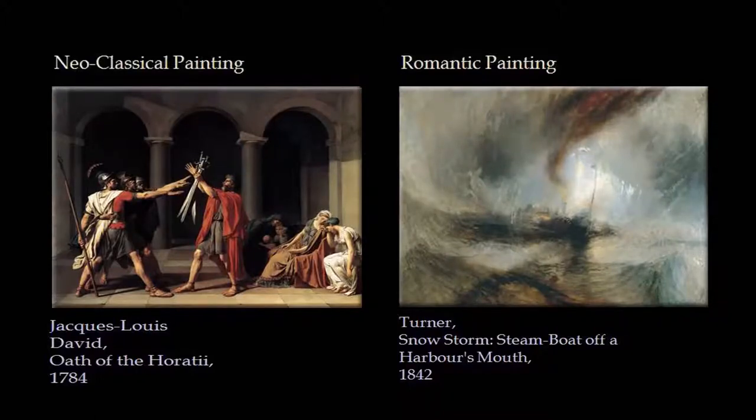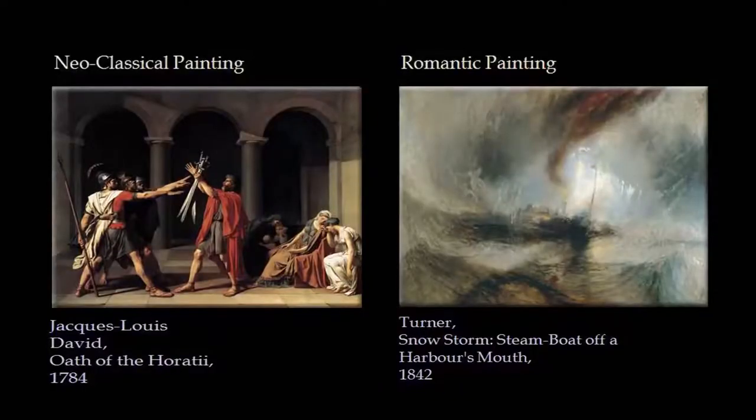Now look at this comparison between a Neoclassical painting by David and a Romantic painting. Clearly the Neoclassical painting renders all kinds of characters with precision, accuracy, clarity of forms, perspective, and figure-to-figure relationships — whereas Turner's paintings simply reject all these classical academic norms and introduce a new method and approach to painting altogether.